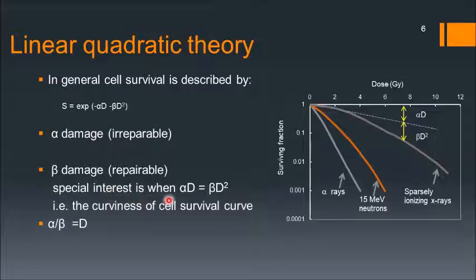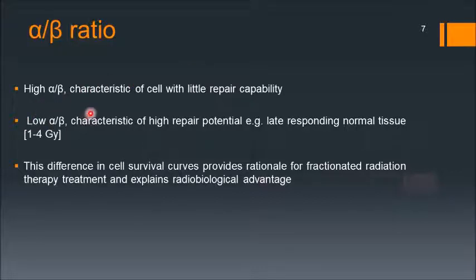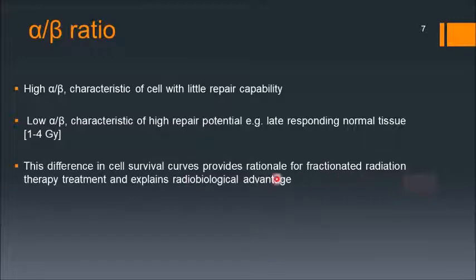Of special interest is the case where alpha d equals beta d squared. When these are equal, alpha divided by beta equals the dose d, so the alpha/beta ratio has units of dose (Gray). If the alpha/beta ratio is high, it is characteristic of cells with little repair capability — these are early responding tissues. A low alpha/beta ratio indicates high repair capability — these are late responding tissues.